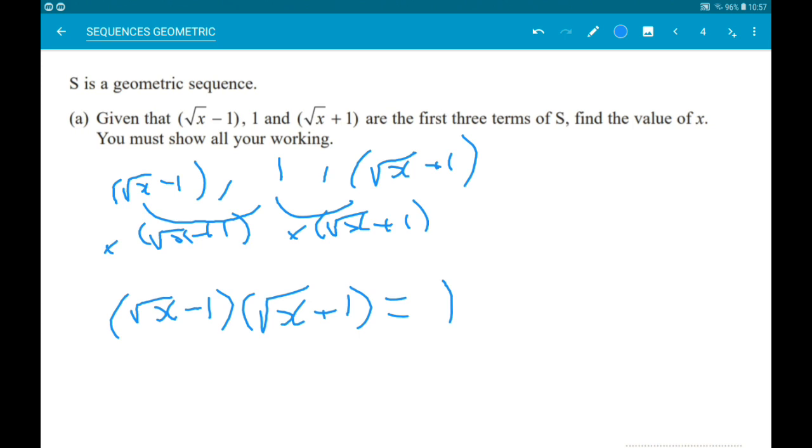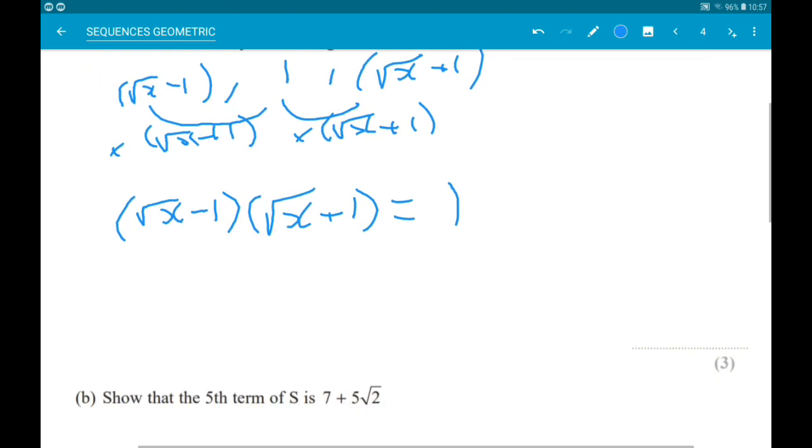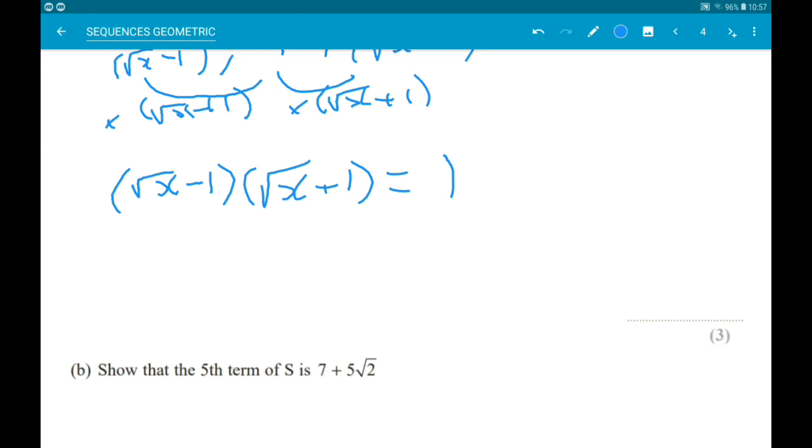So, if we expand the brackets, root x times root x is x. Then we get minus 1 times root x, and plus 1 times root x, so they cancel. So, we then just get minus 1, and then that is equal to 1. So, x is equal to 2.